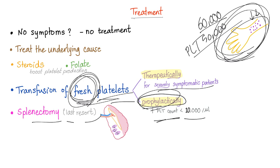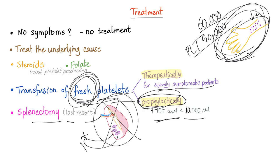Splenectomy is a last resort. Since platelets are hiding in the spleen, removing the spleen will force all platelets back into the bloodstream, raising the platelet count to normal. But it's a last resort because the spleen is an immune organ — it's especially important for immunity in young kids.